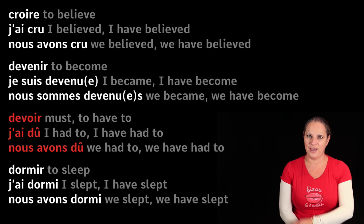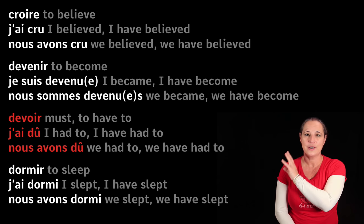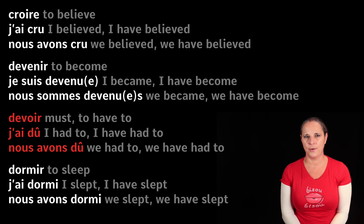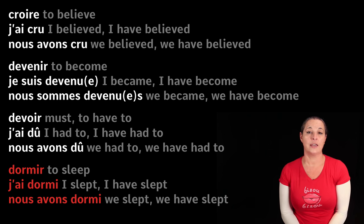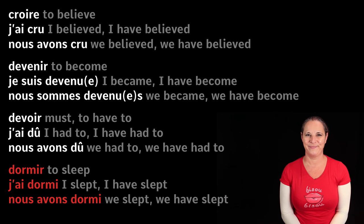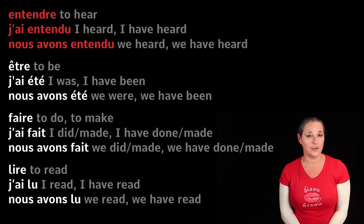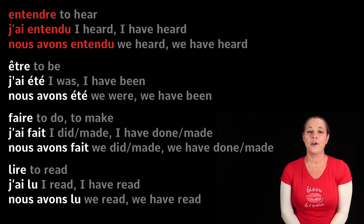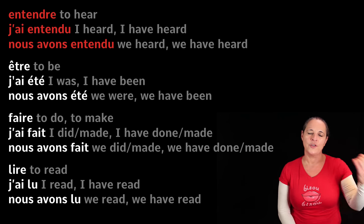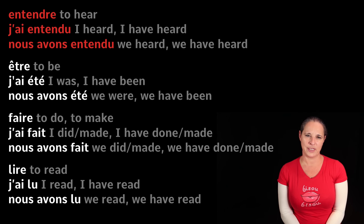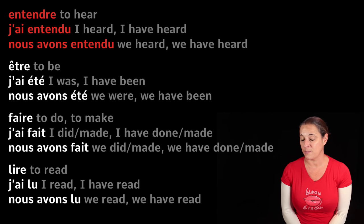Have a look at how different the past participle is from the actual infinitive verb. Dormir means 'to sleep' — j'ai dormi, nous avons dormi. That one is quite simple. Entendre means 'to hear' — j'ai entendu, nous avons entendu: I have heard, we have heard. You'll notice some verbs end with -U quite often in their past participle form — you might as well learn them by heart.